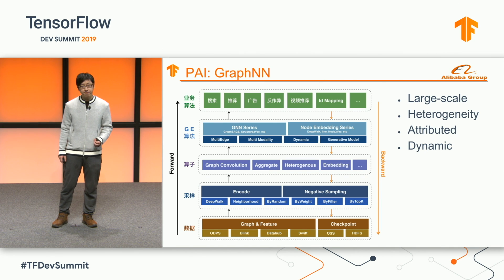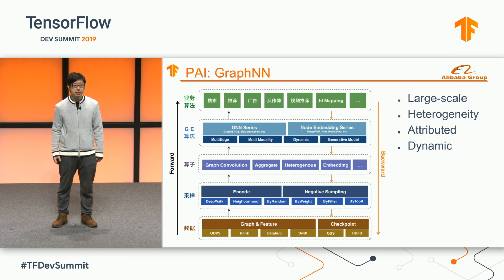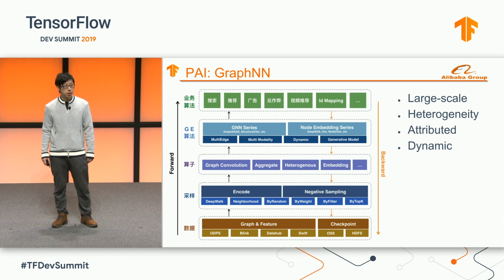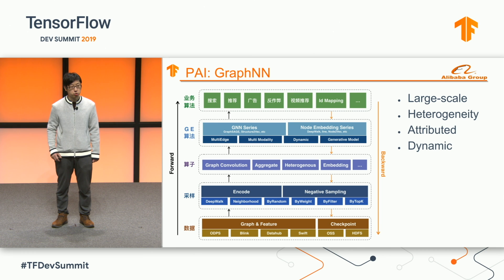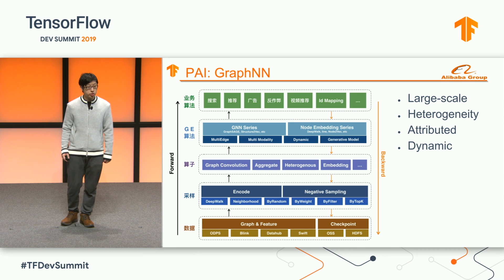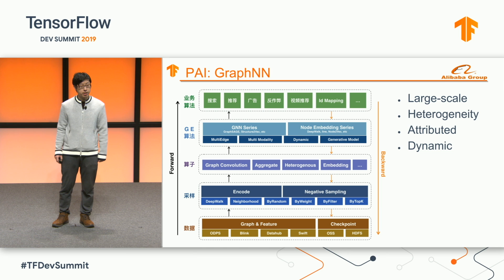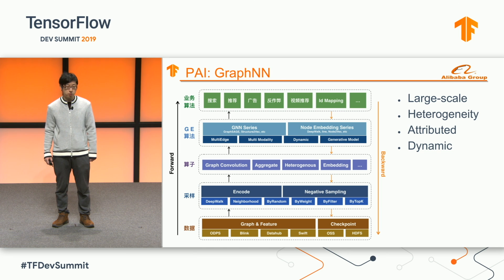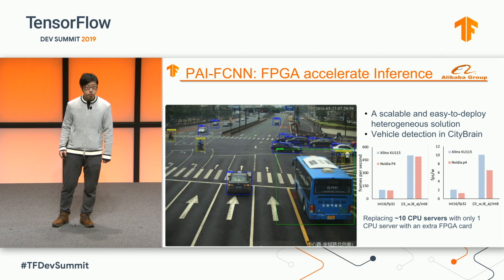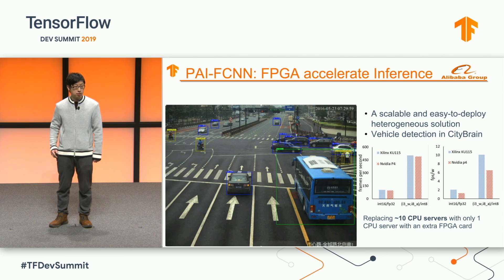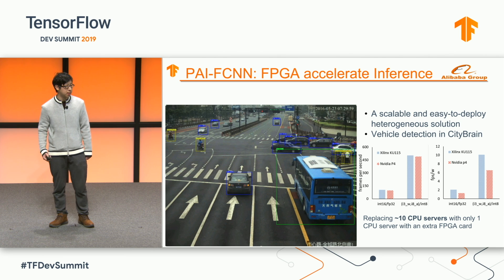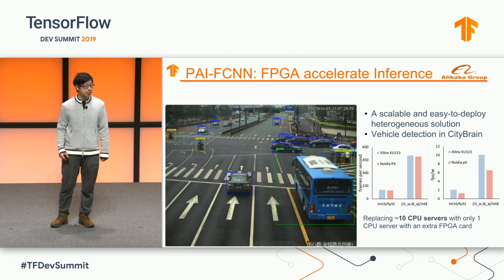Recently, graph neural networks have gained a lot of attention inside Alibaba. In our real scenarios, we face challenges that can be grouped into three properties: large-scale, heterogeneous attributes, and dynamic. We have to enhance TensorFlow to solve those challenges. We also developed a general GNN inference engine on FPGA and integrated this engine with TensorFlow. We are deploying this solution to our City Brain project in China.